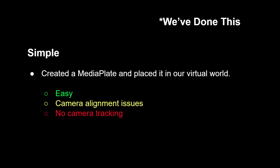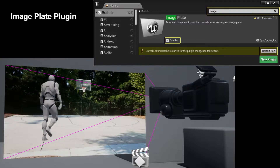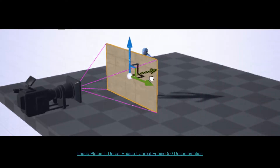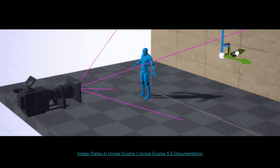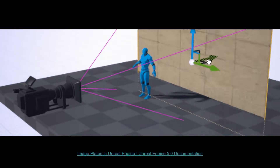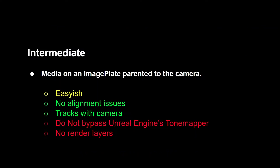The next step would be to use the image plate plugin — this is not turned on by default, it's a plugin that needs to be enabled in Unreal. As you can see, this is video footage attached to the camera on a plane, and then you put 3D elements on top of it or in between the camera and the background. It's basically video footage that's stuck to your screen. If the camera was moving with camera tracking you would see the environment move too.